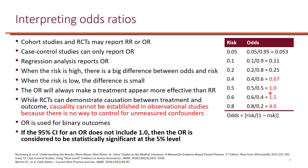When it comes to statistical significance, we use the 95% confidence interval and p-value to determine if the odds ratio is statistically significant. As long as the confidence interval does not include 1 — because 1 means no difference — you can conclude that the results are statistically significant.